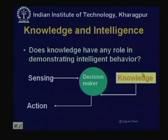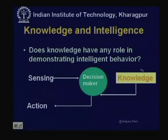Based on that knowledge, the action is taken. We can see that knowledge certainly has a role in demonstrating intelligent behavior, because if we cut this part off, we will be able to sense but will not be able to say what to do or act properly. The fact that we act properly tells us that we have the knowledge in some form, which tells us how to act given a particular scenario in the environment. That is the basic background of knowledge and intelligence.